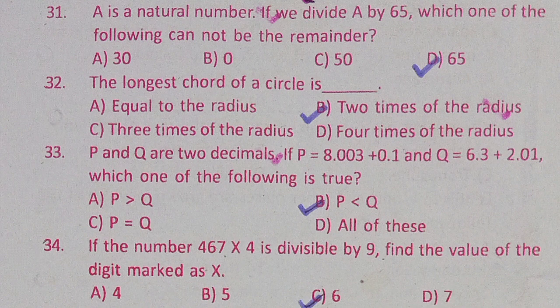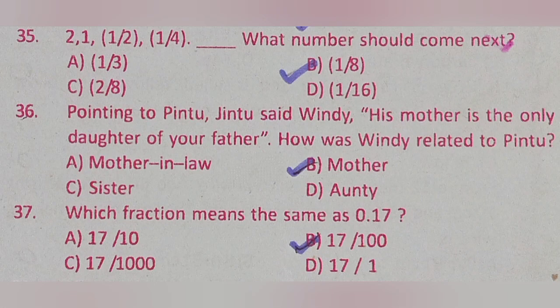Question 34: If the number 467X4 is divisible by 9, find the value of the digit marked X. Option A: 4, Option B: 5, Option C: 6, Option D: 7. The correct answer is Option C: 6.